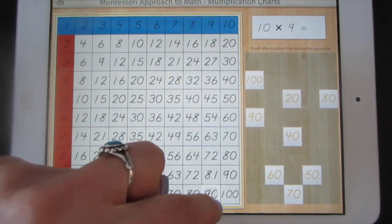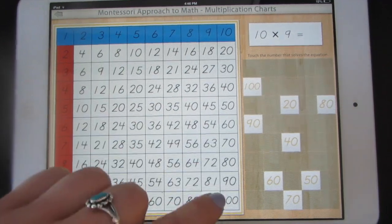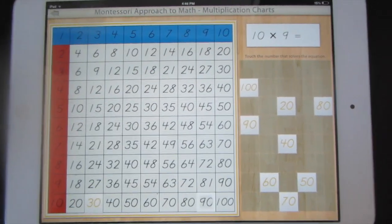These boxes give you a hint to help you see on the Multiplication Chart where the answer is.